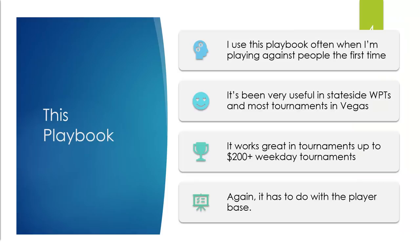I use this playbook often when playing against people for the first time. It's been very useful in stateside WPTs up to $3,500. In most tournaments in Vegas, the higher-stakes Venetians are when people start attacking your C-bets a little bit more — and obviously WPT 2Ks and higher. It works great in tournaments up to $200 weekday tournaments and online tournaments. If you're playing Sunday majors or up to $109s during the weekdays, you're fine. But in those $162–$200 daily tournaments, people start attacking you online. If it's a very educated player base, which is more rare than people realize, they're going to be attacking C-bets quite frequently.